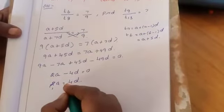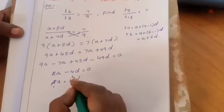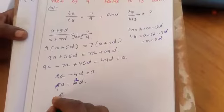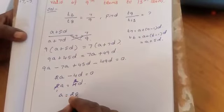2A equal to 4D. Dividing by 2, so A equal to 2D.